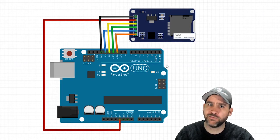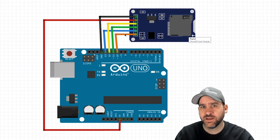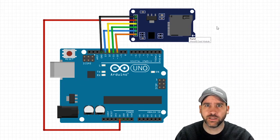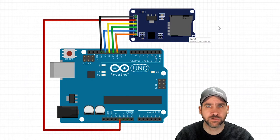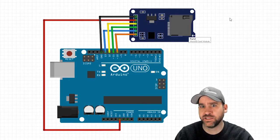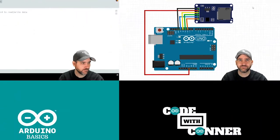Once we have this set up and all six wires run, this is ready to be programmed. Our code is going to be a little more intense for this lesson — it's got a lot of parts to make sure we're handling the files and the SD card properly. Let's move over to our coding interface so we can get started.